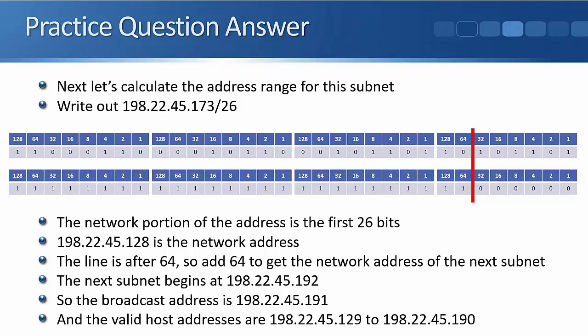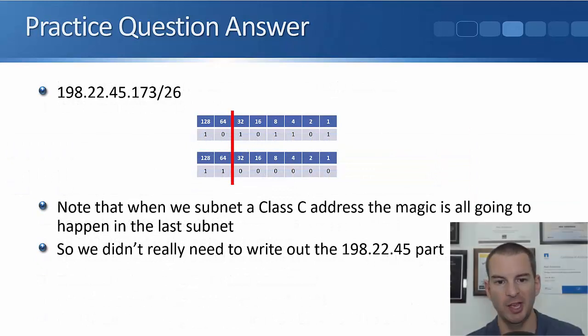Okay, so that is how we can figure it out. And a final important point to tell you here is, notice that everything was done on where the subnet line is. In fact, this example is /26, so that is in the last octet. So we don't actually need to worry about the first three octets. They're always going to be unchanged as 198.22.45 in our example. So you can save some time by only writing out the octet that the subnetting is happening on. You don't have to write the whole thing out in full every time.